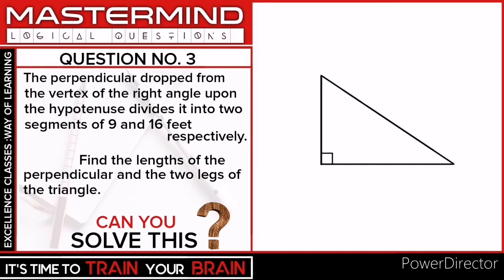We have a right triangle, and we are going to draw a perpendicular from the vertex of the right angle to the hypotenuse. This perpendicular divides the hypotenuse into two segments of 9 and 16 feet. We have to find the length of the perpendicular and the two legs of the triangle. Let the length of the perpendicular be p.